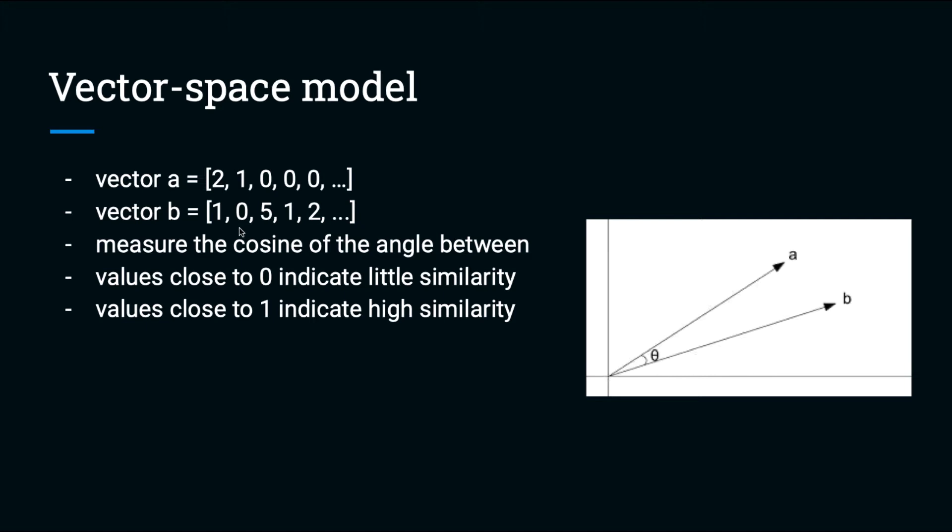An alternative to creating counts is to use binary vectors of ones and zeros indicating the presence or absence of a term in a document. Once these vectors are created, we can compute the cosine of the angle between them to measure the similarity of the documents.